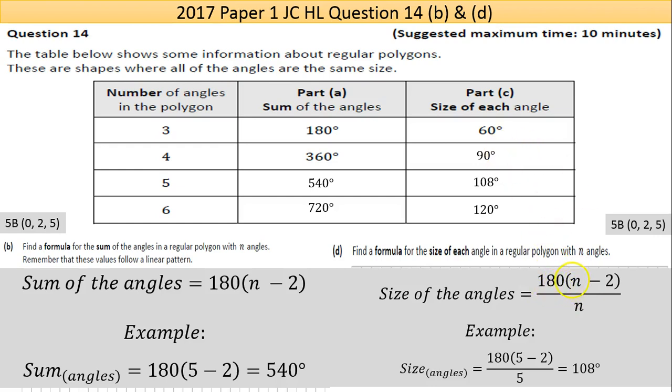So our formula here is 180 times n minus 2, divided by n. For the next one, 180 times 4 minus 2, which is 180 times 2, that's 360, and divide that by 4, and we get 90. So it works. If you test it, it will work for the last two. I have the example for n equals 5 just below.